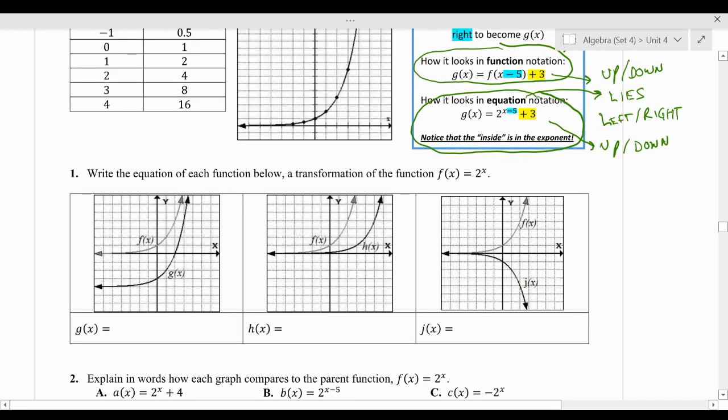So number 1 says write the equation of each function below, a transformation of the function f of x equals 2 to the x. So we're going from g of x. And what I like to do is I like to pick key points. So it looks like right here, 0, 1 looks like a good point. Sorry. And that looks like it goes down 1, 2, 3, 4 spaces. Besides that, I don't notice any other spots. We could check this spot, too.